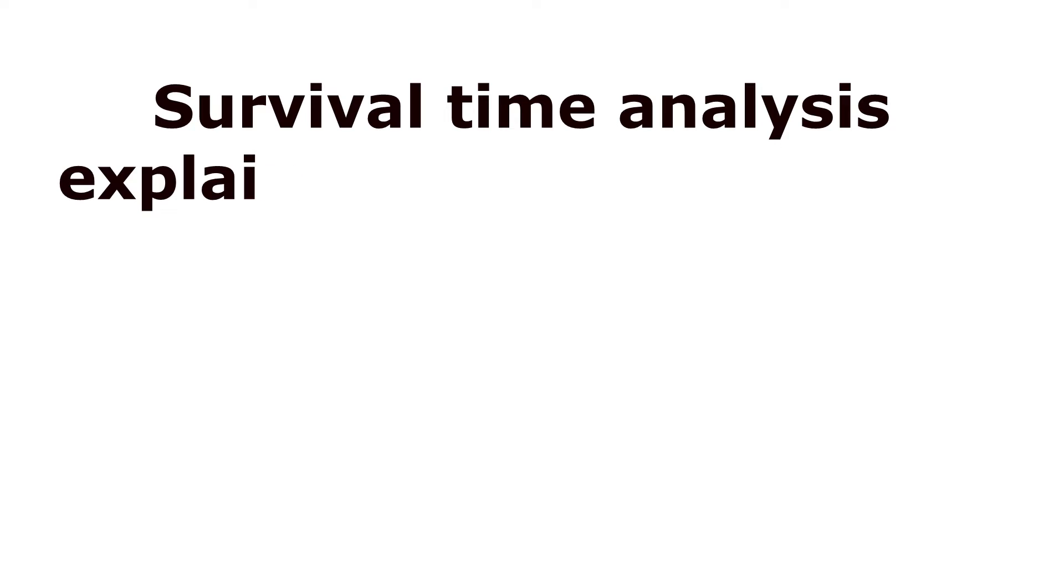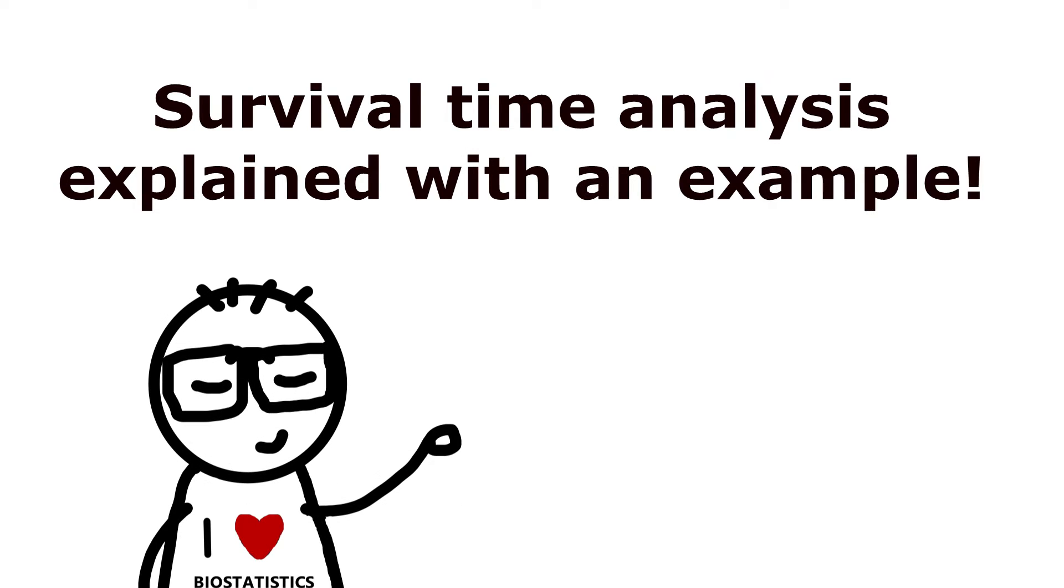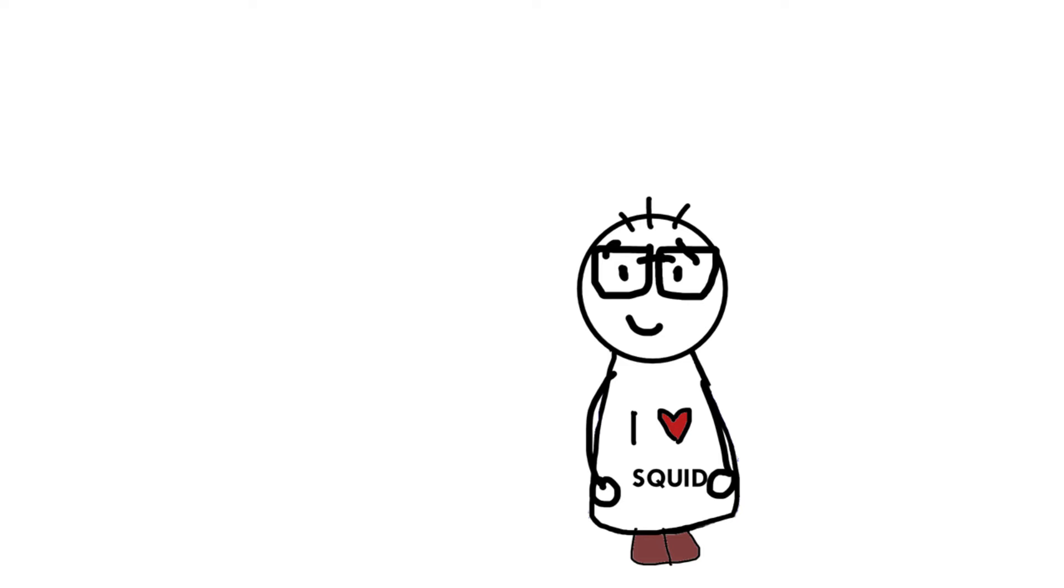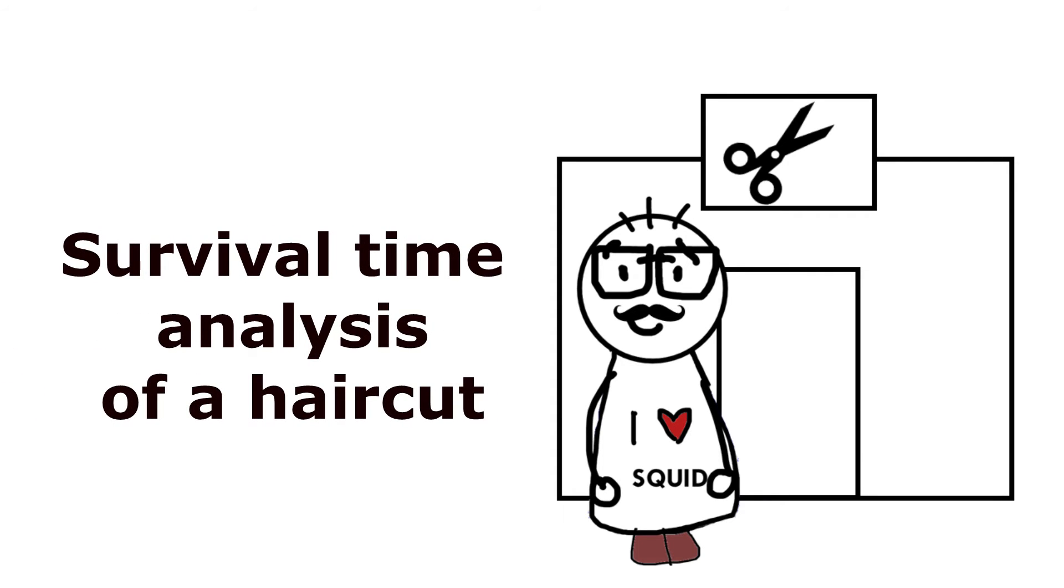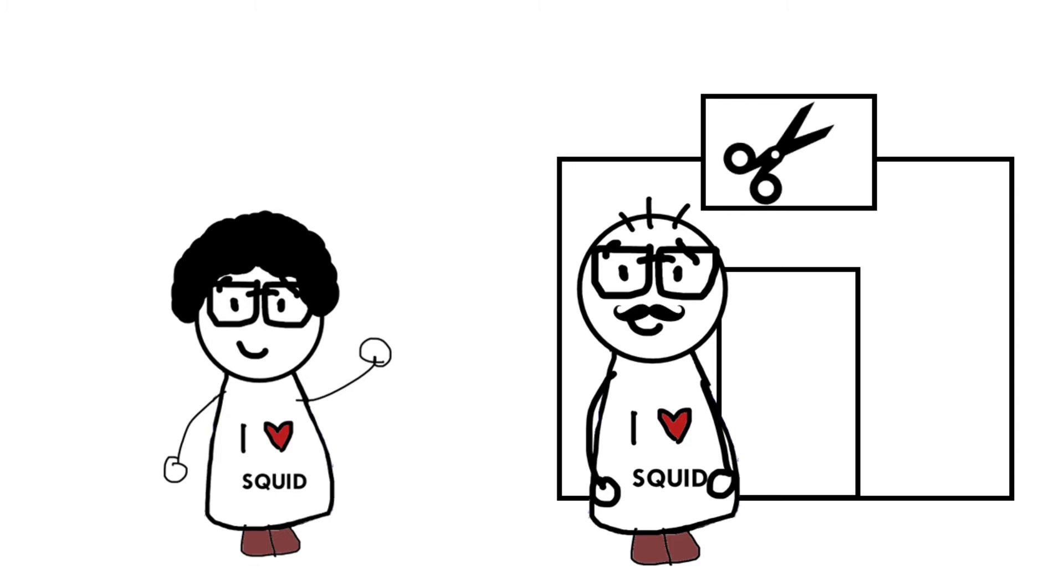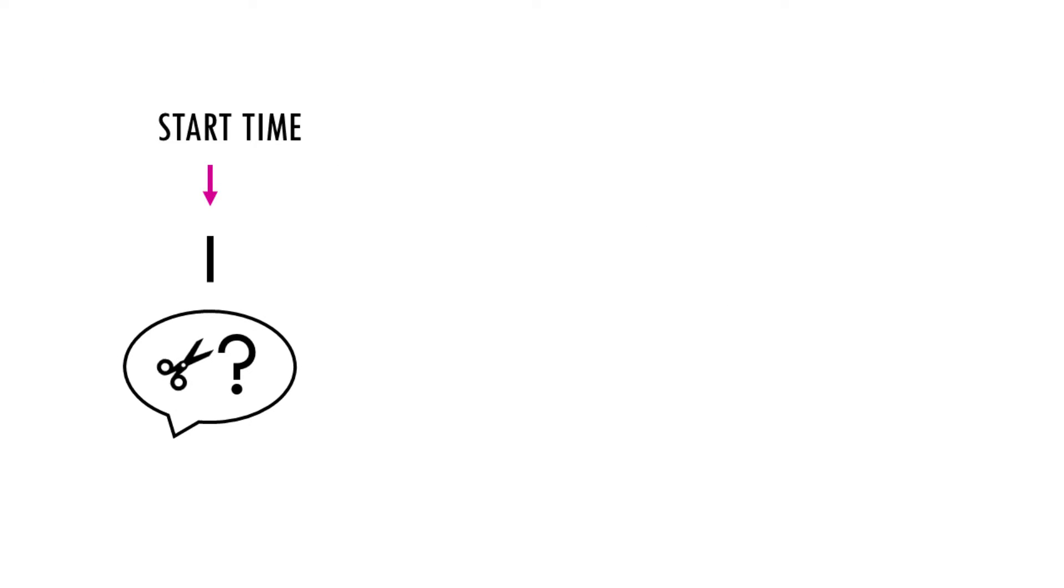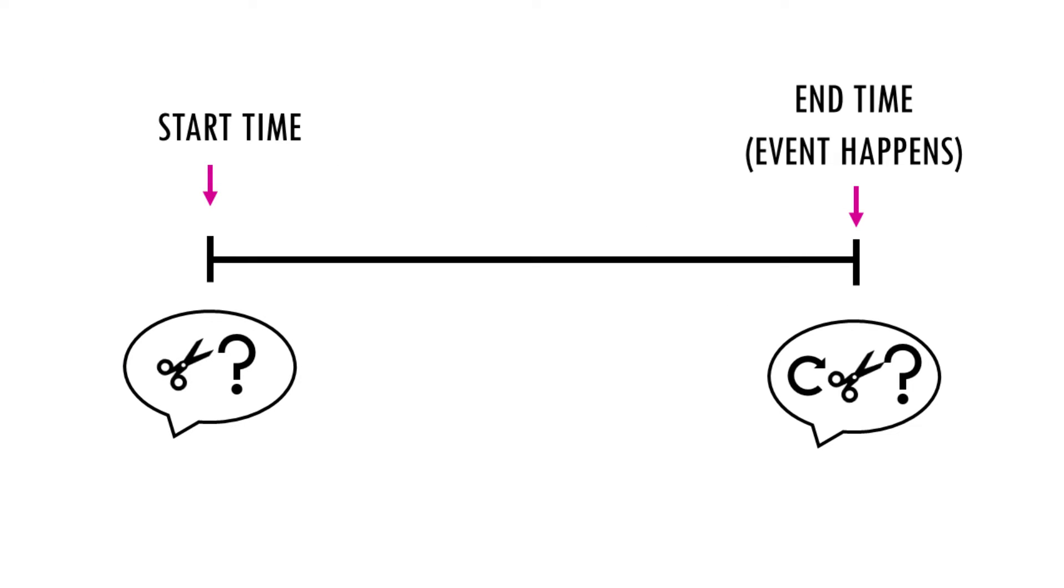So let's have a look at a specific example. Let's consider you're a hairdresser and you want to study the survival time of a haircut. Now your start time is the moment the person comes in for a haircut and the end time or the event is the moment the client comes back in to get a haircut again. You are now interested in the time between those two events. So basically, how long does a haircut last?